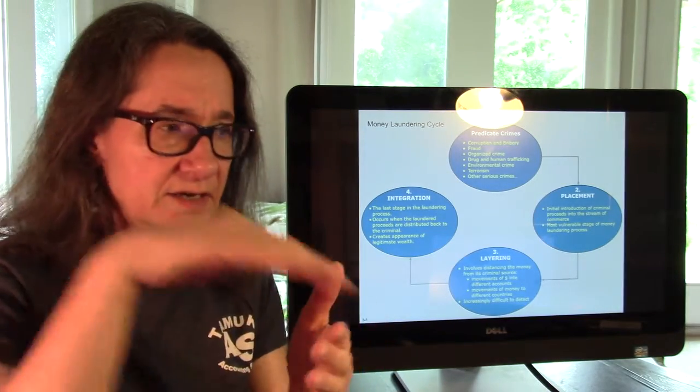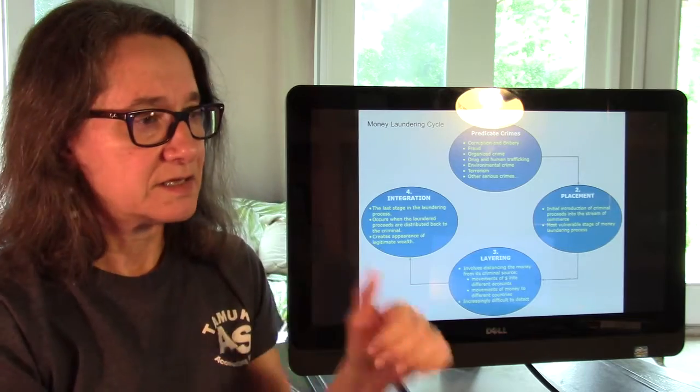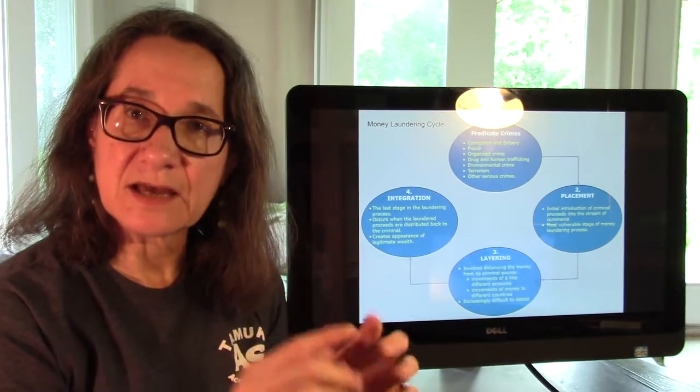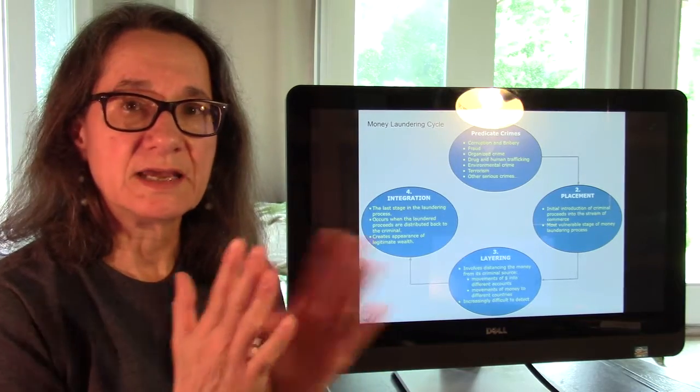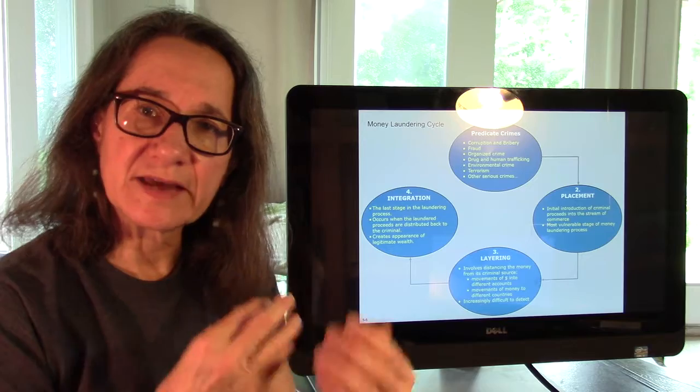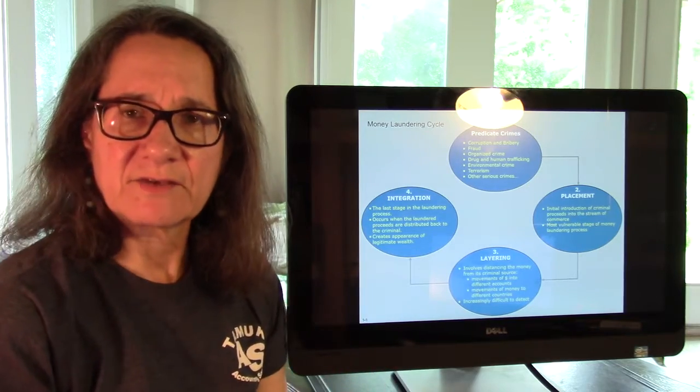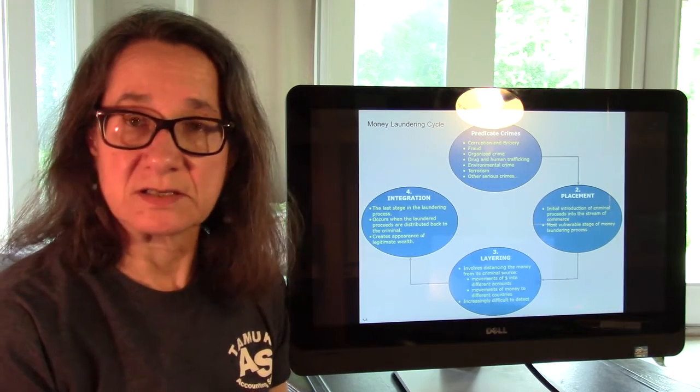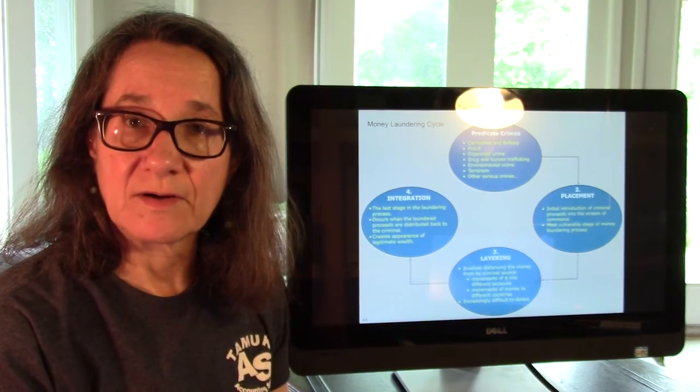Then once they've integrated, they've placed it, they've layered it, now they integrate it back to themselves. So they get it so they can use it. That's what integration is. It's the last steps where the criminal takes that money and now they can use it. They've got it like in a personal account somewhere and they just spend it however they want to spend it because it looks like it's legitimate money.